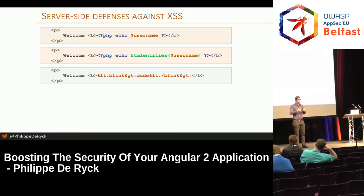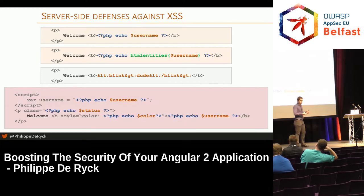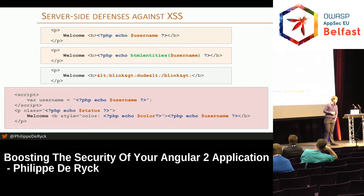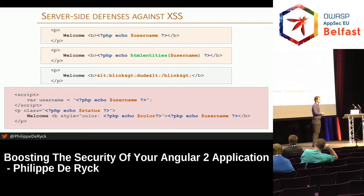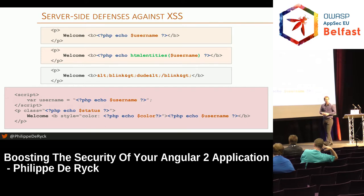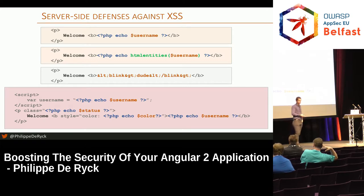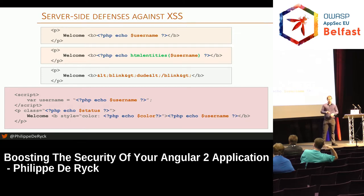Why is it so hard to defend against? It's not limited to one output — it's everywhere, throughout your whole application, in all kinds of different contexts: inside a script block, inside an HTML attribute, inside an HTML tag. All of these contexts require a different way of encoding characters. That's why cross-site scripting is so difficult. But I'm done with PHP — let's move to Angular.